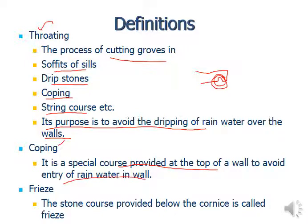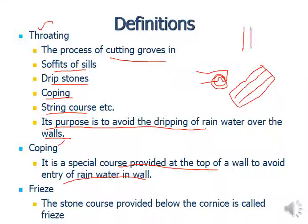Coping can be of any shape (e.g., simple rectangular) and toothing (a groove) can also be provided within the coping to further prevent water from contacting the wall. From the groove, water comes down without contacting the wall surface. Frieze: the stone course provided below the cornice is called the frieze.